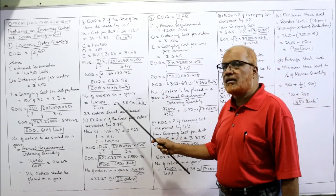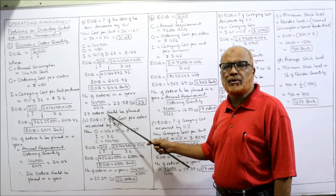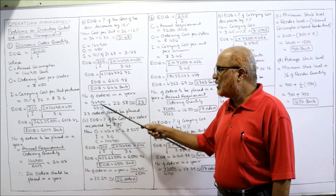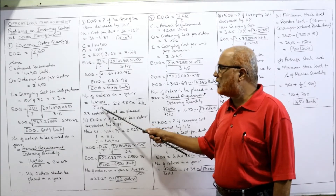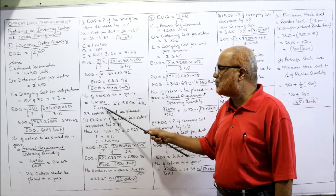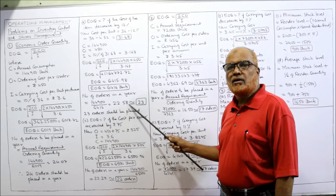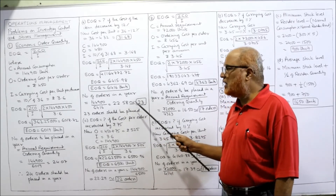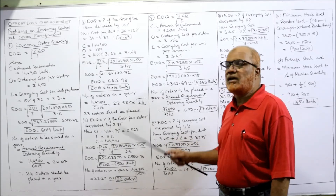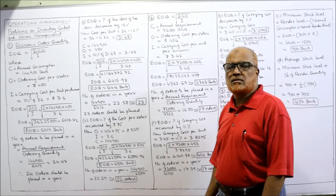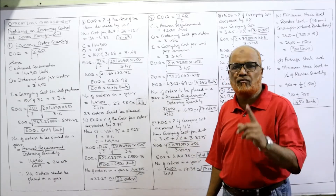Number of orders in a year: annual requirement divided by ordering quantity = 144,900 ÷ 6416 = 22.58, rounded off to 23 orders. So 23 orders have to be made in one year.